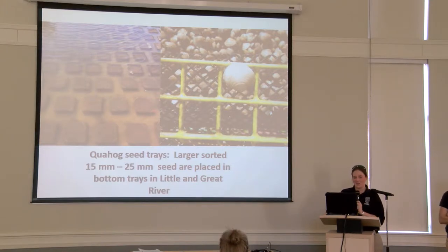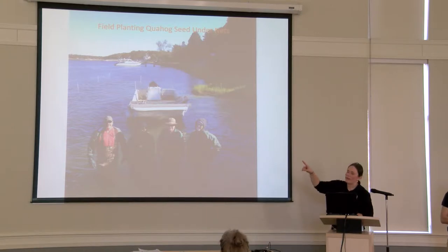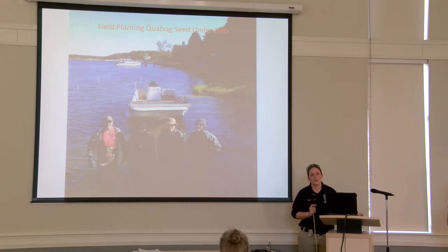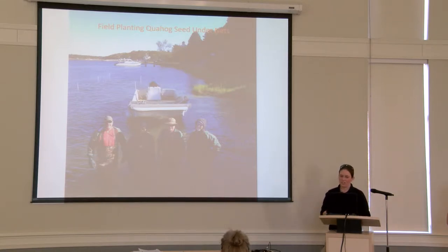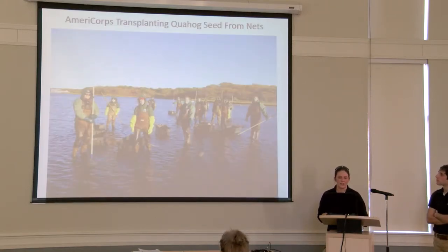Their final stage when we go and plant them in the environment is under nets. Here's the team field planting the quahogs — these little stakes in the background are where our nets are. It's a blanket net and we put them at 100 to 150 per square foot. They can only grow to about two inches at that density, then they'll expel themselves and we'll have to move them to a new area. Here's a group of volunteers transplanting those quahogs into the new area — just raking them out and moving them.